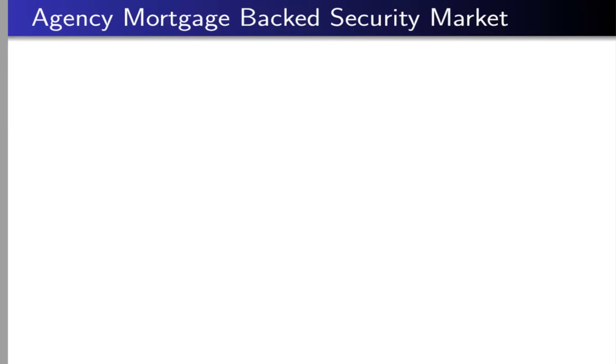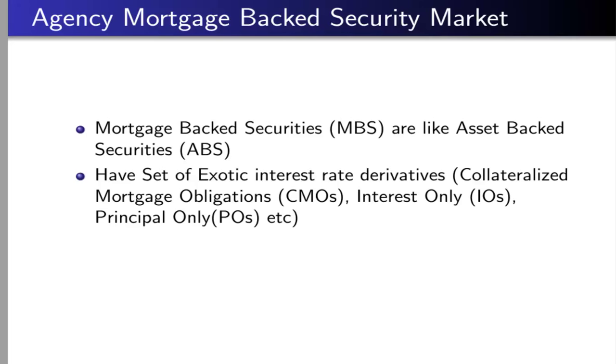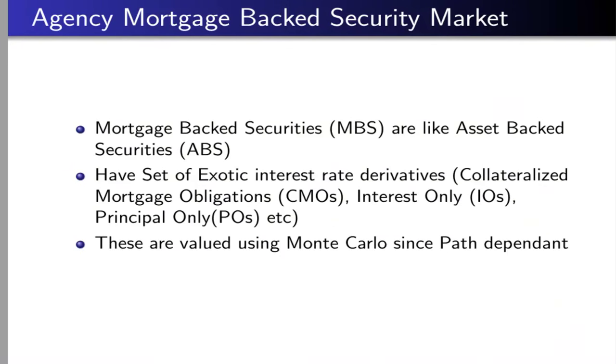They are used, for example, when you're working in the agency mortgage-backed security market. So mortgage-backed securities, MBS, are like asset-backed securities, ABS. They have a set of exotic interest rate derivatives, so you have collateralized mortgage obligations CMOs, interest only options IOs, and principal only options POs, etc. These are valued using Monte Carlo since they're path dependent.